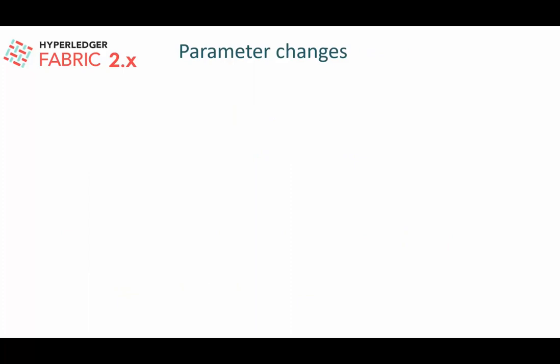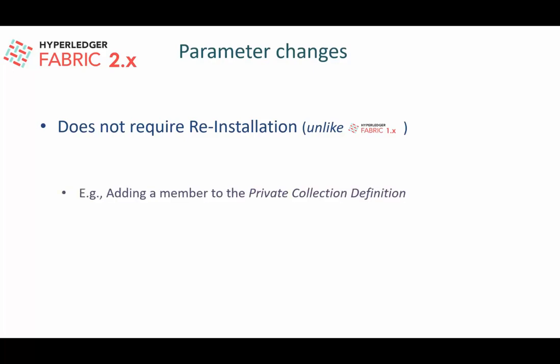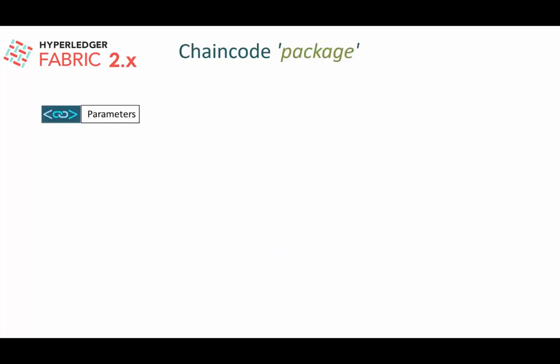Parameter changes in Fabric 2.x do not require reinstallation of the chaincode. For example, if you are adding a new member to the private data collection definition or changing the endorsement policy, you can simply deploy the updated parameters instead of redeploying unchanged code. This is very different from Fabric 1.x, where any parameter change — regardless of whether the code changed — required reinstallation of the chaincode. This is a welcome improvement that eliminates unnecessary code updates.